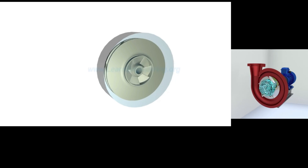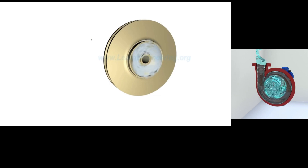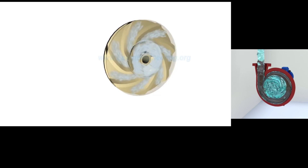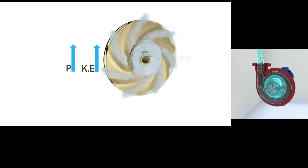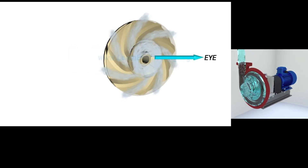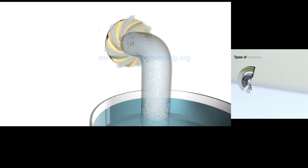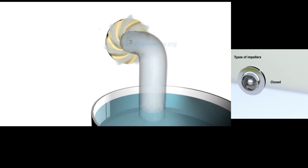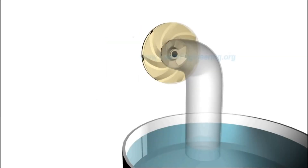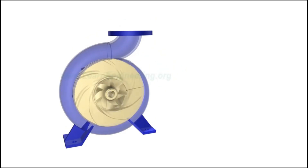The impeller is always immersed in water. When the impeller rotates, it makes the surrounding fluid rotate too, imparting centrifugal force to the water particles, which then move radially outward. At the discharge side, both pressure and kinetic energy rise. At the suction side, water is displaced, creating negative pressure that helps suck fresh water into the system.